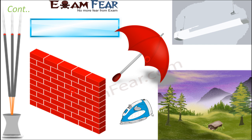A piece of red hot iron is able to produce its own light when it becomes red hot, so it is a luminous object. A sheet of plain glass is transparent because it allows light to pass through it.